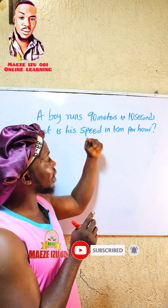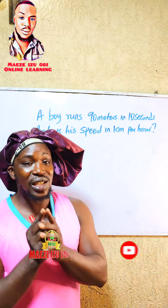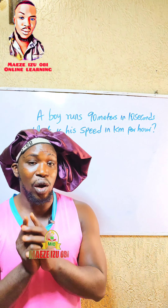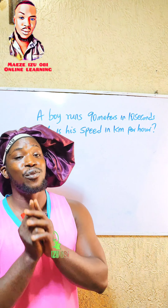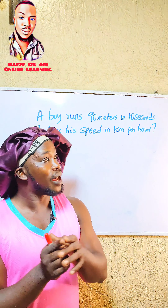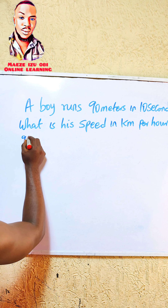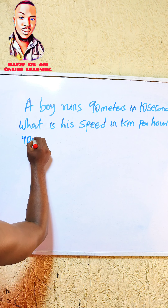Welcome back again. Now I have this question for you — I know you are going to like it. The question says: a boy runs 90 meters in 10 seconds. What is the speed in kilometers per hour? Now one thing you need to understand about this question is that you are going to change the speed into kilometers per hour.